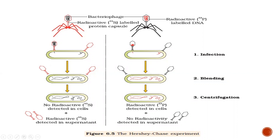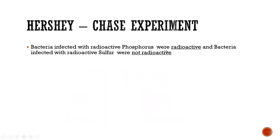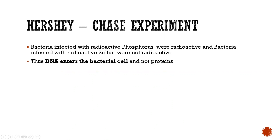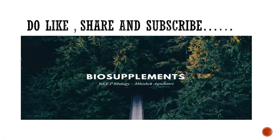S35 radioactivity — the protein — was not found inside; it remained outside. So protein is not the genetic material. These experiments proved that radioactive phosphorus P32 (DNA) was injected inside the bacteria, while S35 (protein) stayed outside. This proves that DNA is our genetic material.